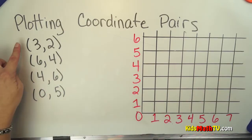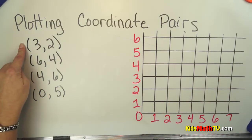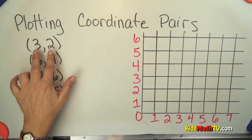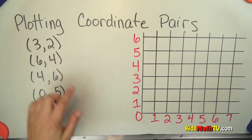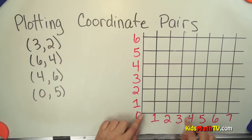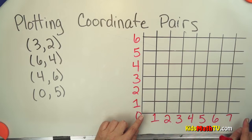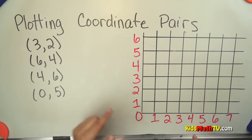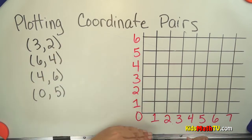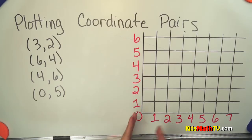When you plot a coordinate pair you have two numbers. The first number is always on the x-axis — we go across first, we go to that number first. The second number is how far up we go, so we go across first and then up.